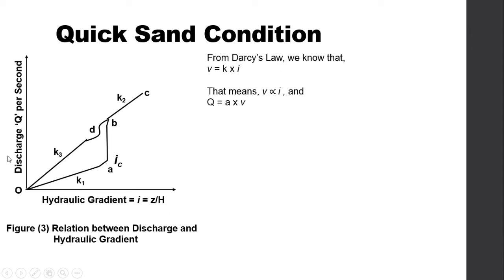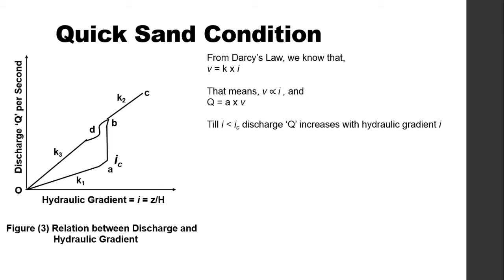While i is less than i_c, discharge q increases along a straight line. In practical terms this corresponds to the groundwater table going on rising. In this straight line relationship the slope represents permeability k1, which is constant for this particular soil. So it remains constant throughout this linear portion of the graph.